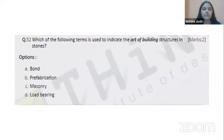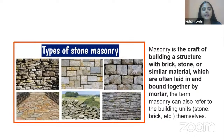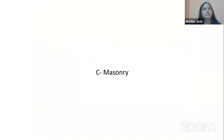Which term indicates the art of building structures out of stone? The four options are bond, prefabrication, masonry, and load bearing. Bond refers to how bricks are joined; prefabrication means making elements before bringing to site; load bearing refers to objects that take weight. Masonry is the type of construction done using stone, and there are different kinds of stone masonry — with or without mortar. The right answer is C, masonry.